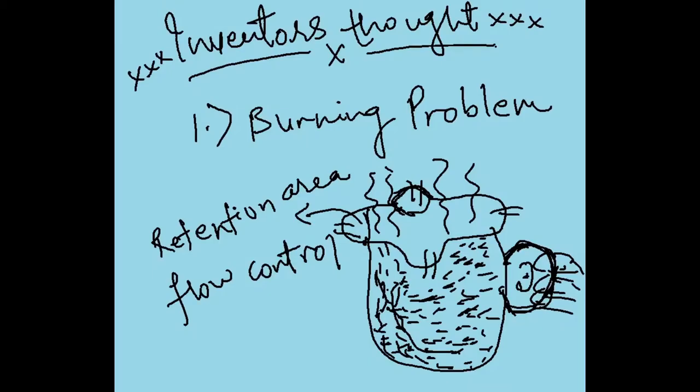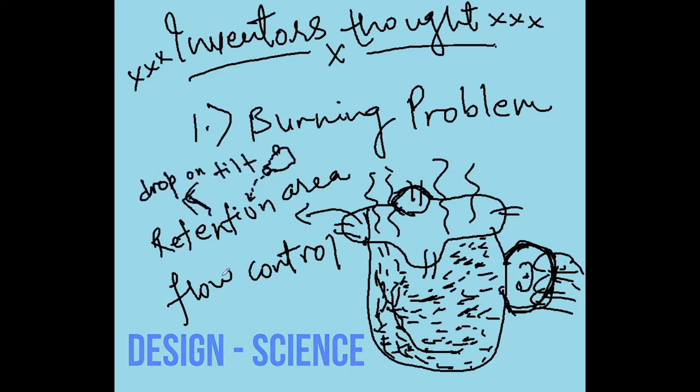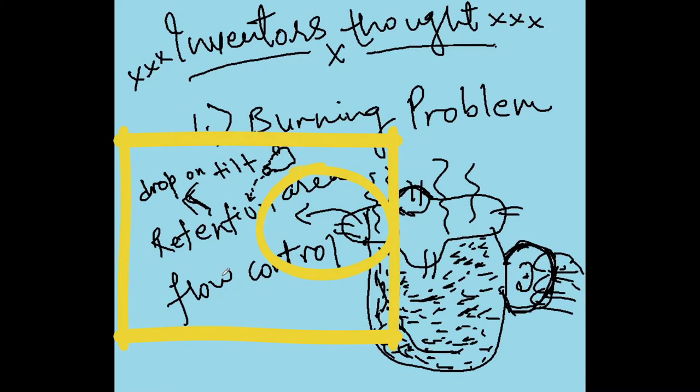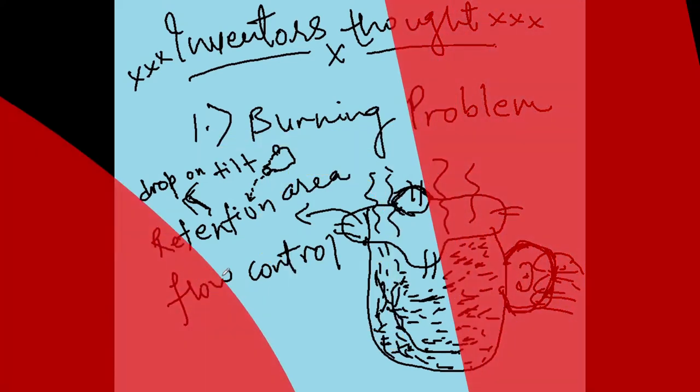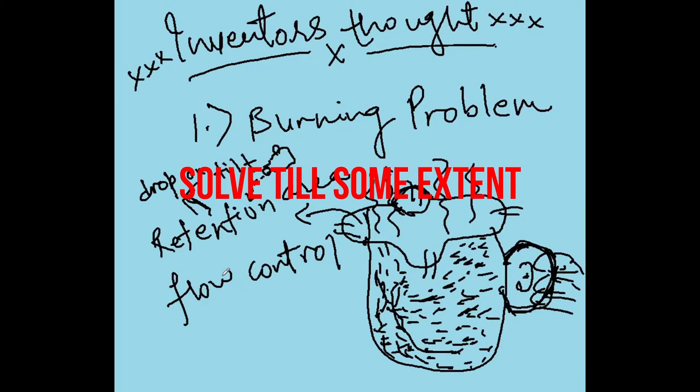We will mainly focus on three problems. Let's solve the burning problem first. It can be solved either through small design change or using science. Design change could be the good retention area and the flow control on the edge. By these small changes, problem can be averted on an average.